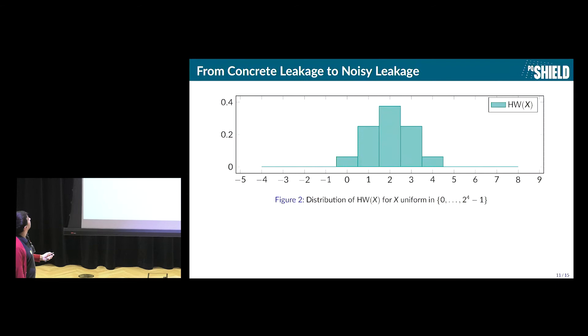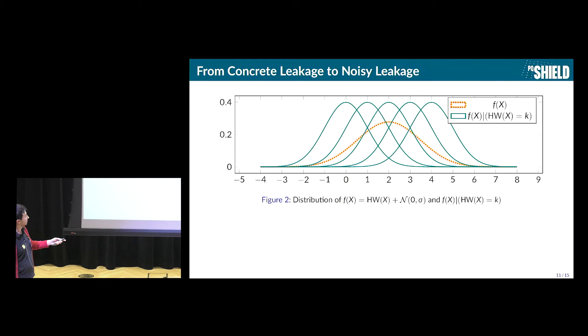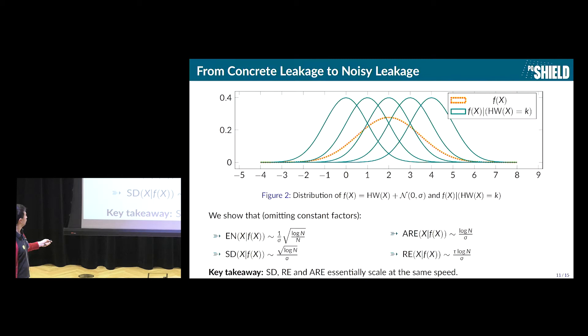How much time do I have? Five minutes? OK, I'm going to be quick then. Then what we also did was linking the first row of the picture I showed you at the beginning to the second row. So we considered the concrete leakage model that I told you about previously. And we compute exactly what are the noisiness metrics for this model. And the key takeaway is a huge simplification. But the key takeaway is that for this reduction between the first row and the second row, they are all equivalent. So we don't really need to care about it.